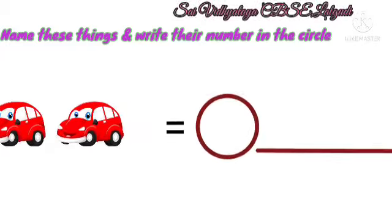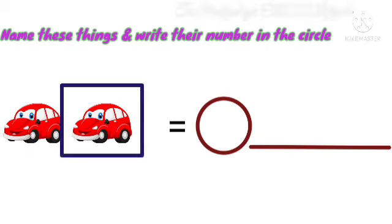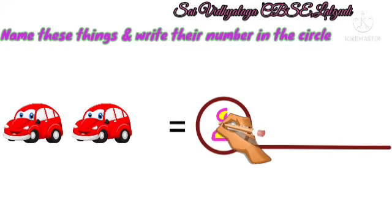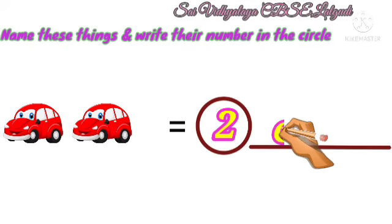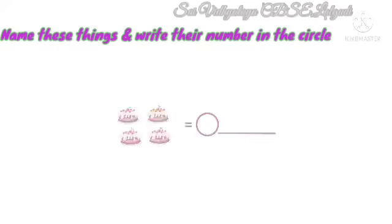Next example. What is this? This is a car. Here we have 2 cars. So write 2 in the circle. And write cars in the given space.